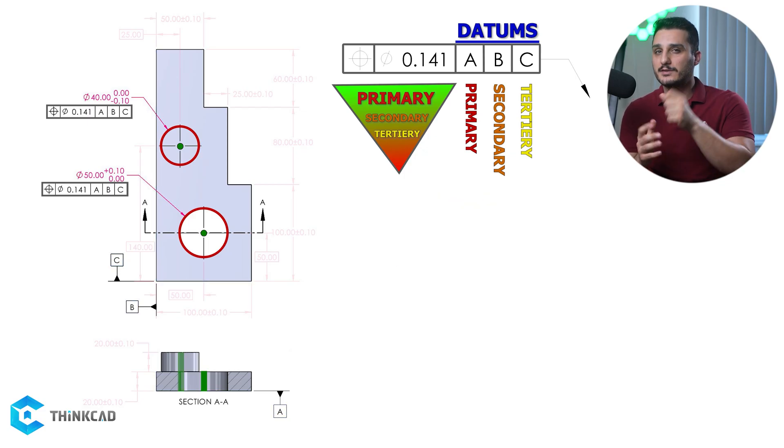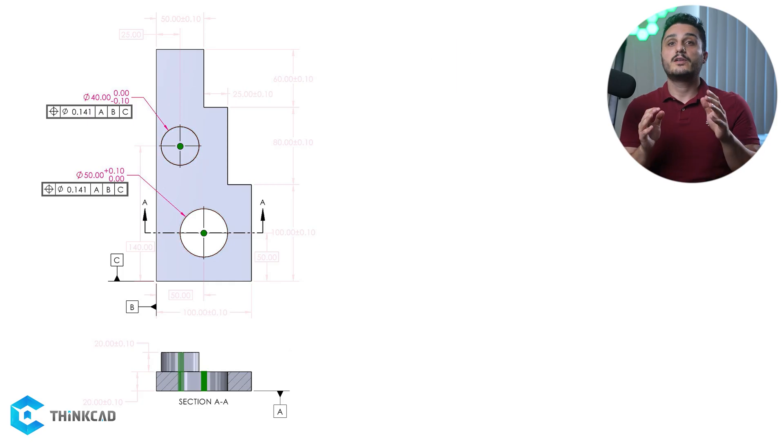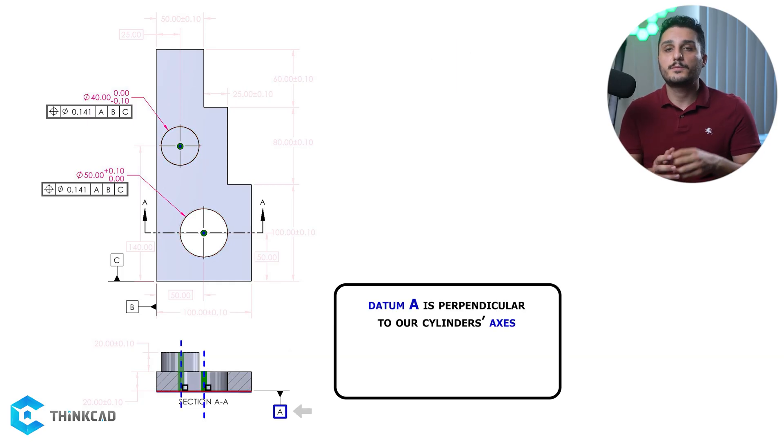Now let's see what A, B, and C are doing here. Well first of all, notice that datum A is perpendicular to your two axes. When you use the position symbol in GD&T, if your datum is perpendicular to your axis, it simply means that your tolerance zone is perpendicular to that datum. Easy right?